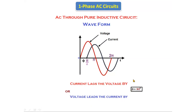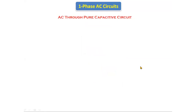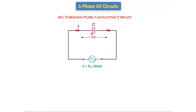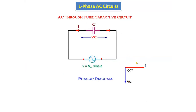Now let's see the pure capacitive circuit — if we give the AC supply to the pure capacitive circuit, how it behaves. We are giving the AC supply to the pure capacitive circuit. I is the total current and VC is the voltage across the capacitor. Now if you see the phasor diagram of the capacitive circuit: